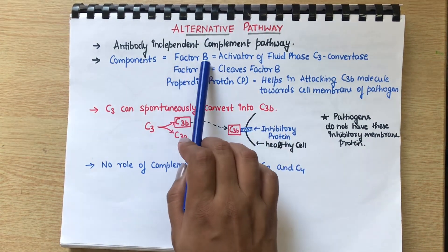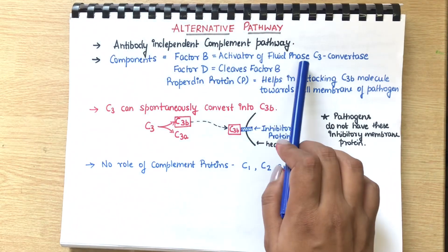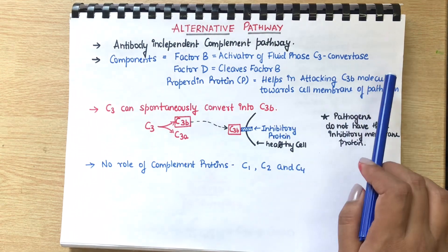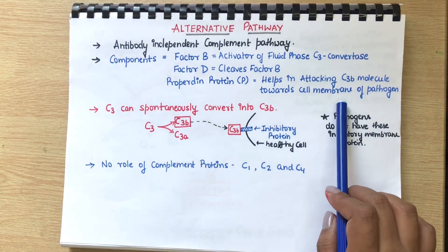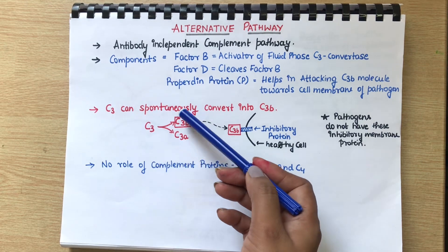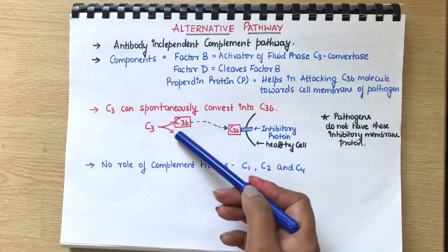Factor B is activator of fluid phase C3 convertase, and properdin protein helps in attaching C3b molecule towards the cell membrane of the pathogen. As I told you, C3 is spontaneously converted or cleaved into C3a and C3b, C3b being the activated part.